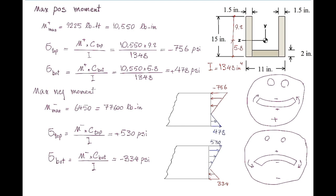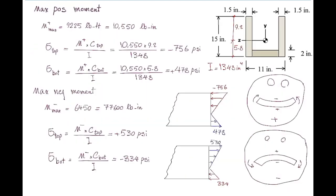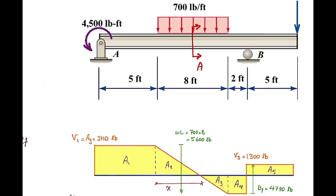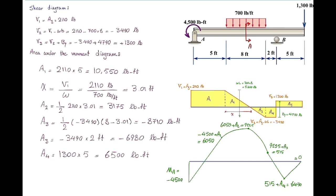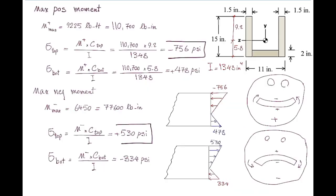Once we determine these two stresses, are they located at the same place in the beam? The maximum positive moment is located at section AA, and the maximum negative moment is located at a different section. They are at two different places. If the beam has a constant cross-section and I want to design it against maximum stresses, I pick the overall maximum. The maximum compressive stress is negative 756 PSI, and the maximum tensile stress is positive 530 PSI. That is the final answer for this problem.